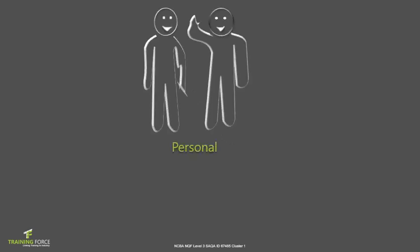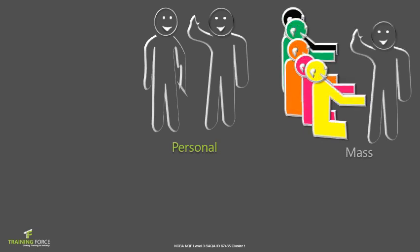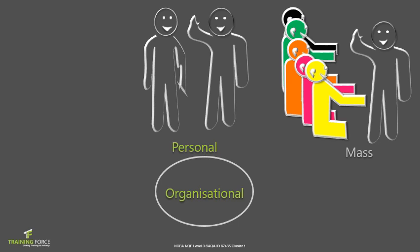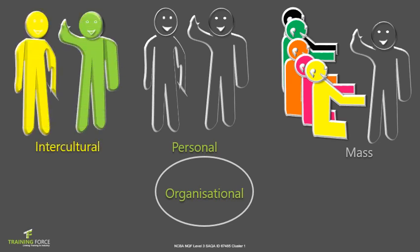You may encounter any one of the following four communication forms. Personal communication is when you're communicating with yourself or with one or two other people. Mass communication is when you're communicating or talking to a lot of people at the same time. Organizational communication happens in the workplace. And intercultural communication can be personal, mass, or organizational but takes cultural differences into consideration.